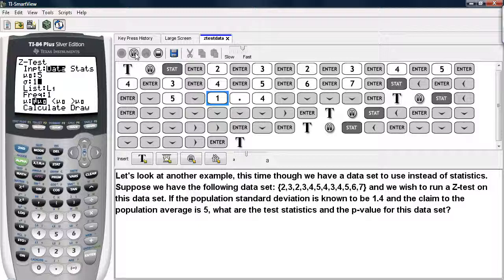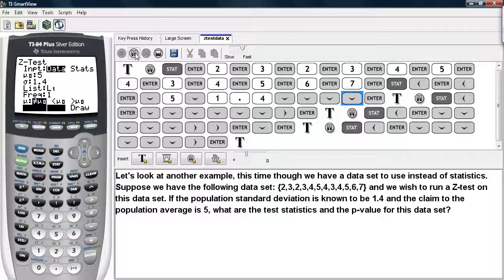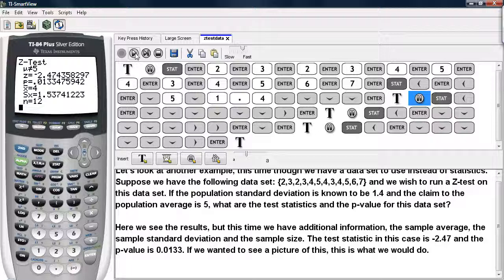and we'll enter in the claim to the population average, which for our example is 5, the population standard deviation, which we were given to be 1.4, the L1 is the list where our data is, the frequency we'll keep at 1, the alternative that we're running is a 2-sided alternative, and now we ask the calculator to calculate.